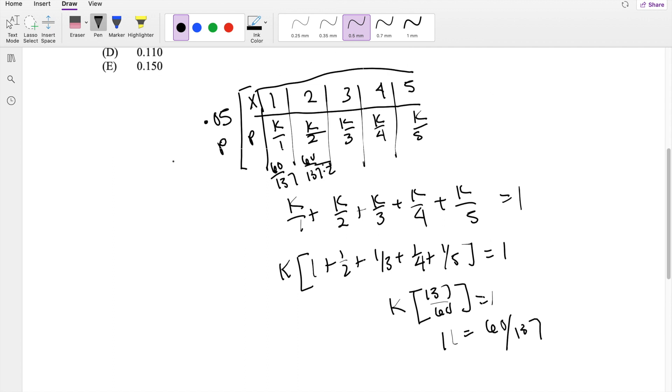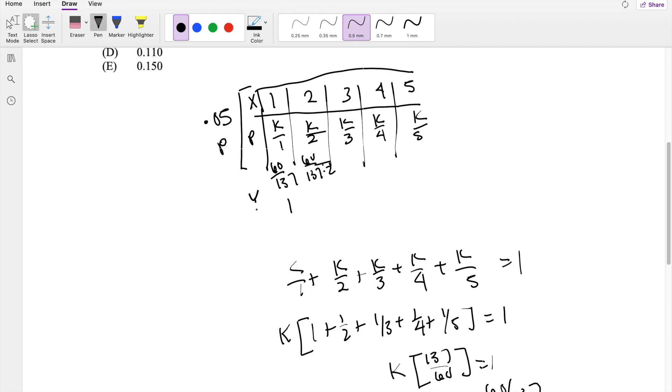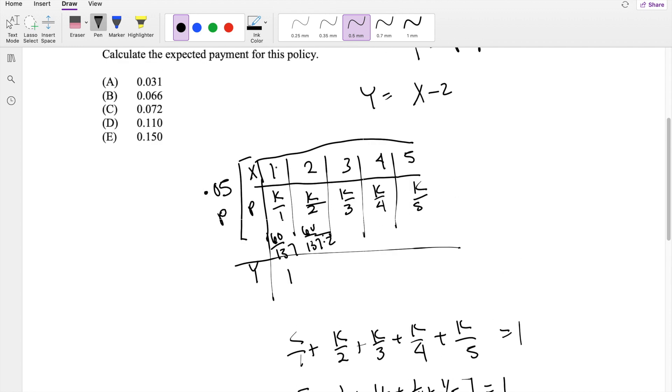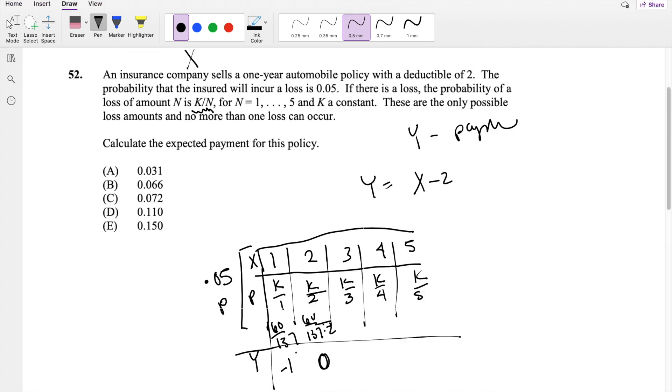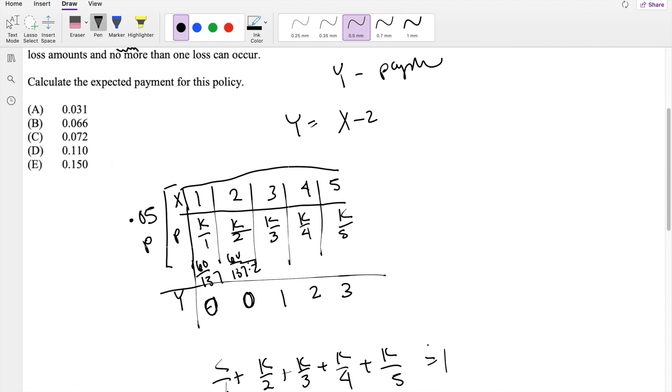But the actual Y value is going to be X minus 2. But we can't have negative payment where the insurance pays them money. So this is going to be 0 as well. So 3 minus 2 is 1, 4 minus 2 is 2, and 5 minus 2 is 3.